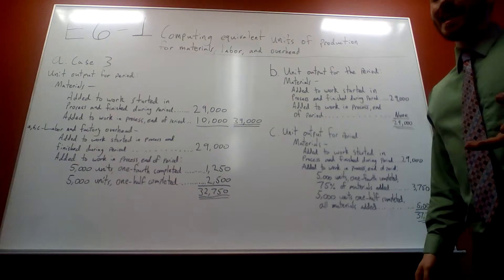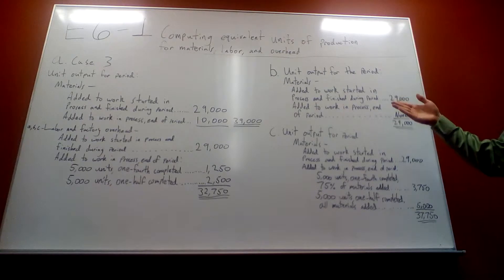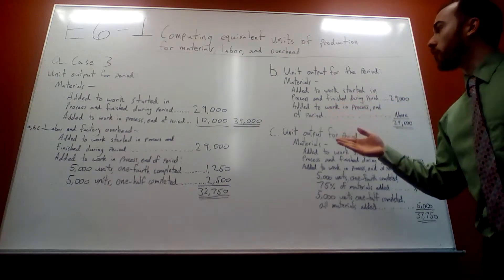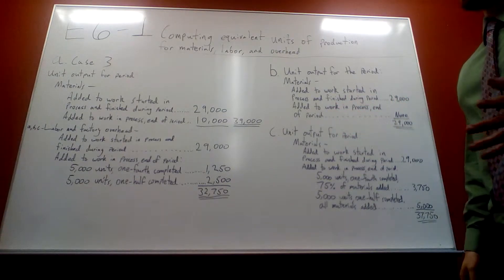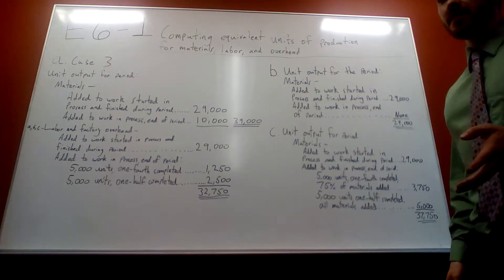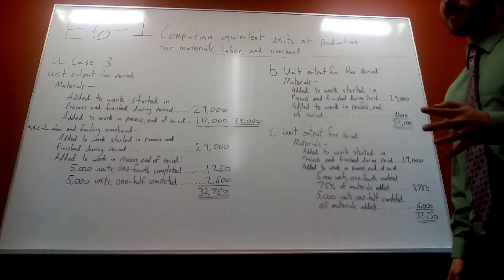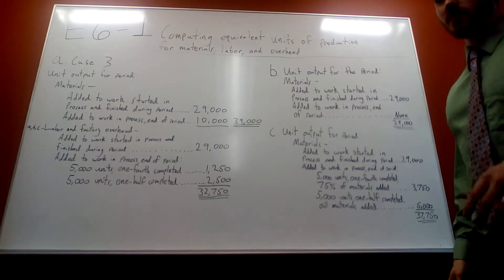So this is Example 6-1, Computing Equivalent Units of Production for Materials, Labor, and Overhead. We're only doing Case 3 because if you've taken the class, that's usually what's assigned. Case 3 is enough to explain what's going on.